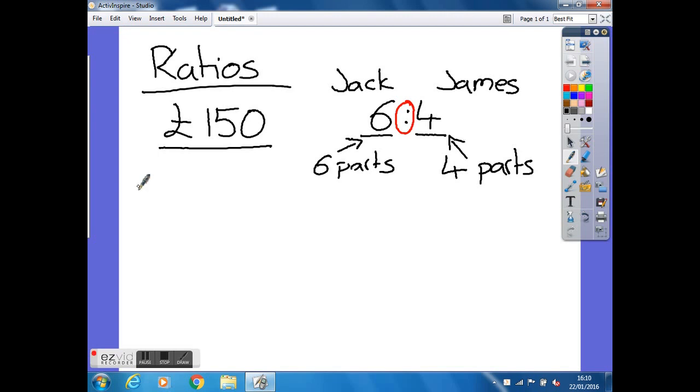And to do this there's a couple fairly easy steps to get us started. The first thing we have to do is to add all the parts together. So for us it's just the six parts that Jack's got and the four parts that James has got, which equals ten. You might have one that's got three or four different people but the technique is still the same. Just add all the parts together and that will work out the total parts that we have.